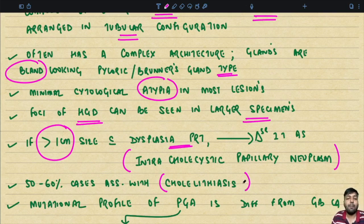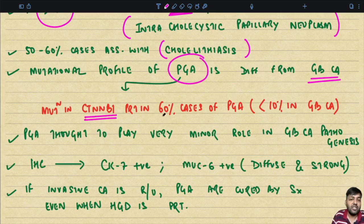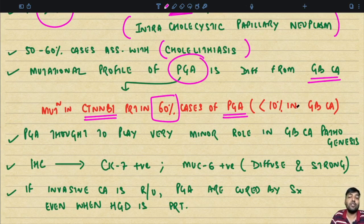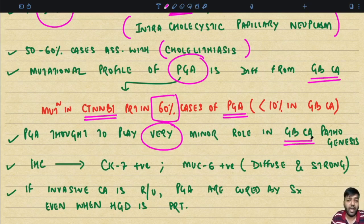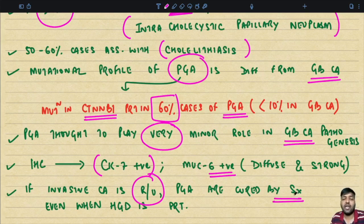The mutational profile of pyloric gland adenoma is very different from gallbladder carcinoma. PGA shows mutation in the CTNNB1 gene in 60 percent of cases, compared to gallbladder carcinoma. Therefore, it is hypothesized that PGA is not a precursor for gallbladder carcinoma and plays a very minor role in its pathogenesis. Immunohistochemically, PGA is CK7 positive and MUC6 positive with diffuse and strong positivity. If invasive carcinoma is ruled out, PGA can be cured by cholecystectomy even when high-grade dysplasia is present.